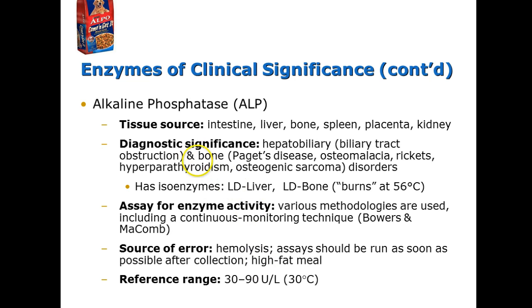Alkaline phosphatase is found in the intestine, liver, bone, spleen, placenta, and kidney. It is of diagnostic significance in hepatobiliary and bone issues — including biliary tract obstruction, Paget's disease, osteomalacia, rickets, hyperparathyroidism, and osteogenic sarcoma. We can do isoenzymes on this — specifically the liver and bone fractions. If we heat the sample to 56 degrees, the bone fraction burns away and the liver fraction remains, allowing us to determine if the patient has hepatobiliary disease or a bone issue. The mnemonic is that a dog named ELPO likes liver and bone.